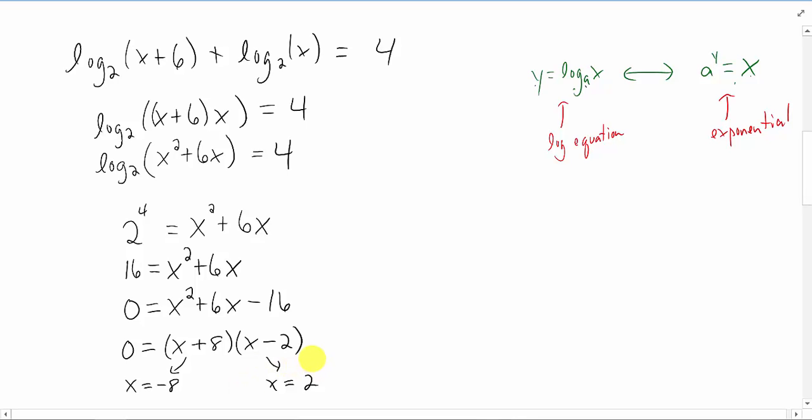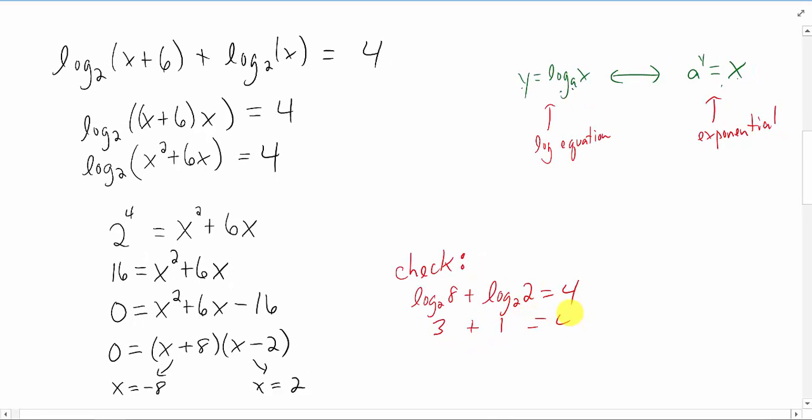Now I say possible solution because we should check. Sometimes we get results here that aren't actual solutions of a logarithmic equation. So okay, x equals 2 we will check first. If you plug in x equals 2 to the original equation you have log base 2 of 8 plus log base 2 of 2 equals 4. Log base 2 of 8 is 3, log base 2 of 2 is 1, and yes this should add up to 4. If you are struggling with why this is 3 and why this is 2, please go back to I believe the video of the week number 11 for an explanation. So we checked our result x equals 2 and it checks out just fine.